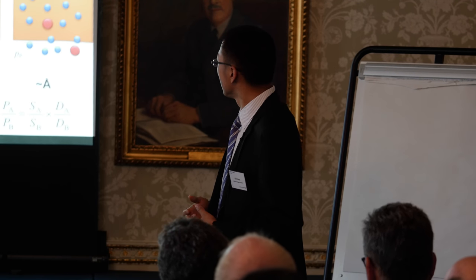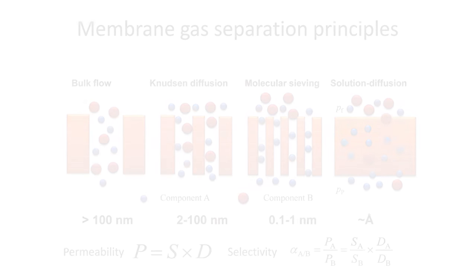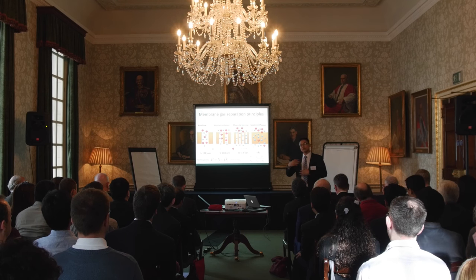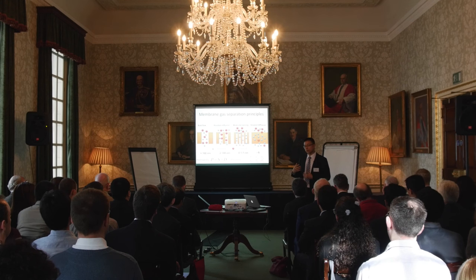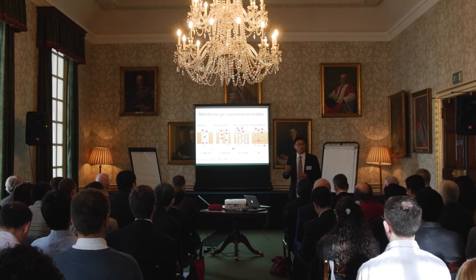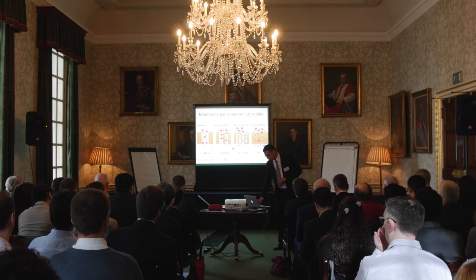Conventional gas separation membranes follow the solution diffusion model. These membranes are made of dense polymers — linear polymer chains, alternatively cross-linked — that don't have intrinsic microporosity. Separation is based on gas molecules dissolving into the polymer membrane and then diffusing through it. We are working on the next-generation polymers that have defined pore sizes, like a zeolite, so you can separate molecules by shape and size.